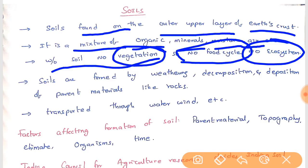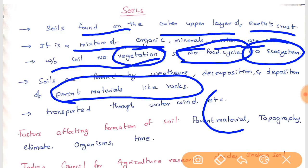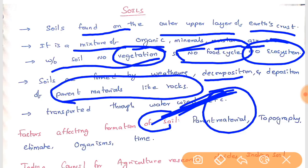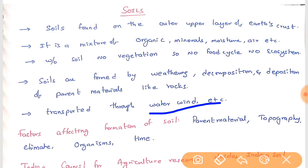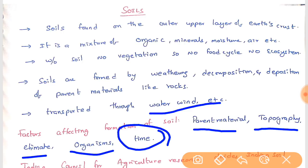How soils are formed: the parent material for soils are rocks. These rocks, due to weathering, form very fine, small pieces — this is called weathering — or they are decomposed. These weathered and decomposed materials deposit together and form soils, and they are transported from one place to another through water and wind, or through man or animals. The factors affecting the formation of soil are: parent material, topography, climate, organisms, and time.